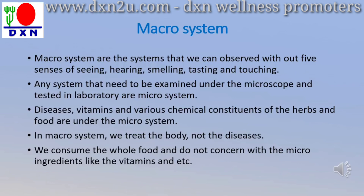All systems that need to be examined under the microscope and tested in laboratories are the micro system. For example, diseases — you need to do blood tests, many tests in the laboratory. Vitamins and many chemical constituents of herbs and food are under the micro system.